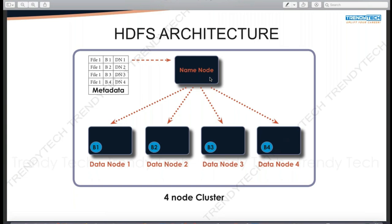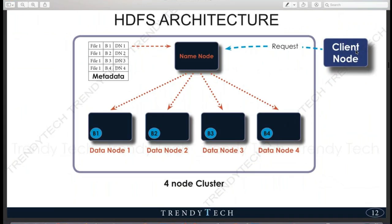The NameNode holds the metadata as a table tracking what is kept where, and DataNodes hold the actual data in the form of blocks. If you are a client sitting on a computer and want to read file one, your request goes to the NameNode — because you don't know where the file is kept. The NameNode checks its metadata table and gives back the information: block one is on DataNode 1, block two is on DataNode 2, and so on.